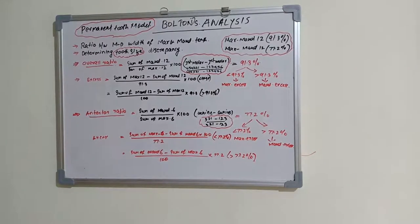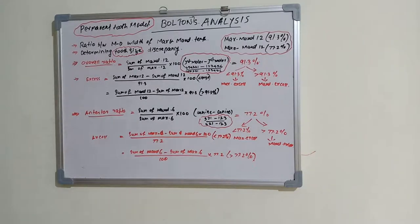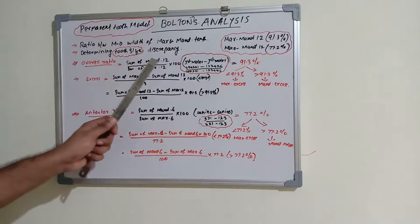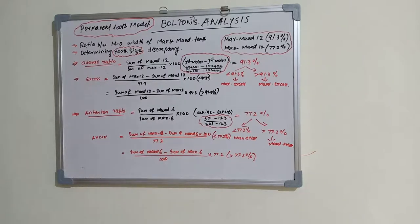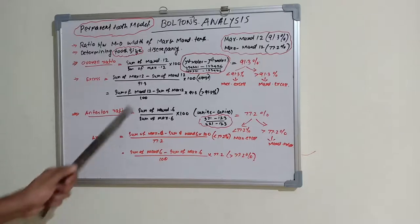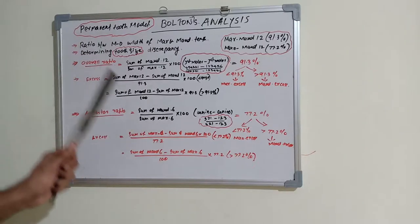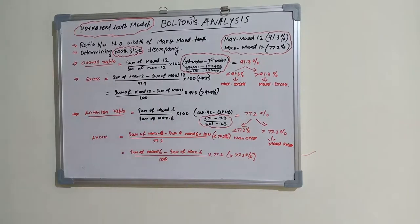Understanding the excess material is important so we can do extraction or other changes in maxillary or mandibular teeth to correct overbite and alignment. For the anterior ratio, the same concept applies but on six teeth — canine to canine on both upper and lower. The anterior ratio is the sum of mandibular 6 divided by the sum of maxillary 6, multiplied by 100. Ideally this gives 77.2%.